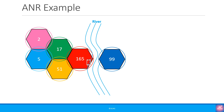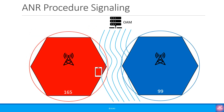Let's now jump to an example explaining ANR. Let's say the red cell with PCI of 165 has just been switched on and it's figured out that cells 17 and 51 are its immediate neighbors — it cannot see any other cell. On one side of this cell is a river, so it cannot see the cell with PCI 99. When it configures the UE for measurements, it will ask the UE to report all the cells it can see, and the UE will then report the red cell as a detected cell. Let's look at the ANR procedure steps.